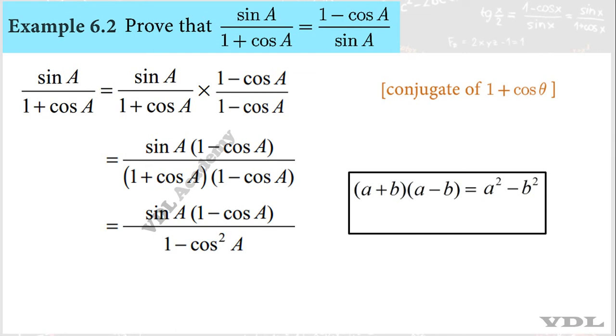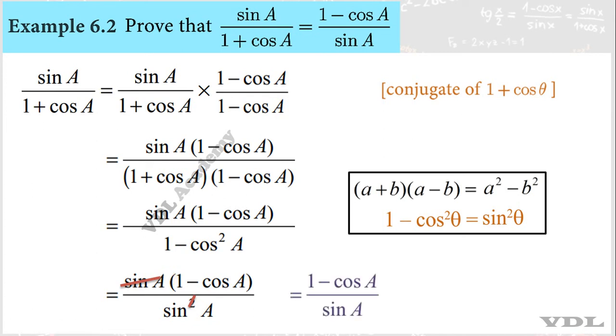This is A theta. 1 minus cos squared theta is nothing but sin squared theta. We can substitute denominator. Now, sin A cancels. What is 1 minus cos A divided by sin A. That's all. Easy.